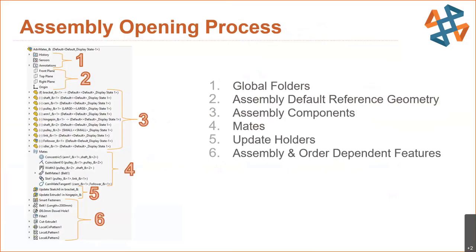Now for the assembly opening process — this gives you a better idea of how SOLIDWORKS actually opens a file. Number one is your global folders, which includes history, sensors, and annotations at the very top. Next, it's followed by the default reference geometry — the front plane, top plane, right plane, and origin. Those are the second thing to actually be opened.